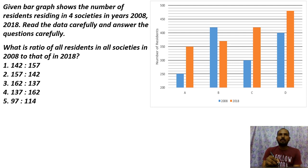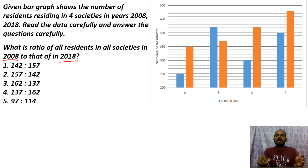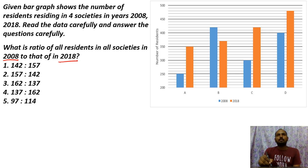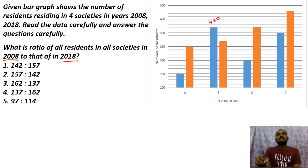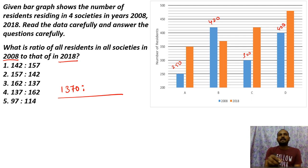Next question: what is the ratio of all residents in all societies in 2008 and 2018 together? Put 2008 on one side and 2018 on the other. For 2008: 250 plus 420 = 670, plus 300 = 970, plus 400 = 1370. So 2008 total is 1370.